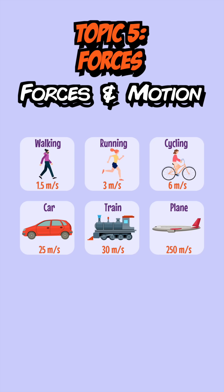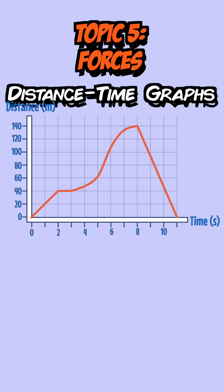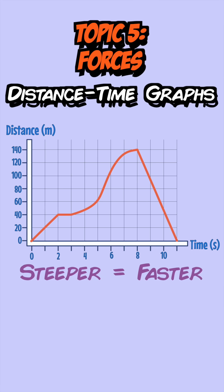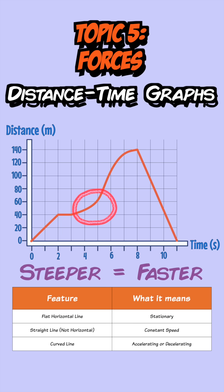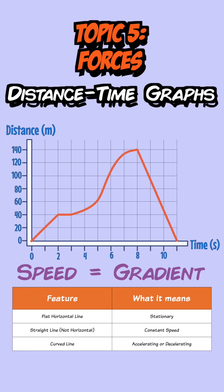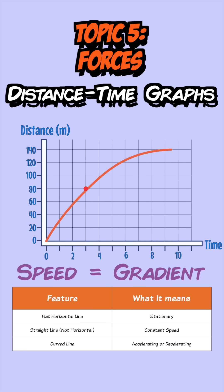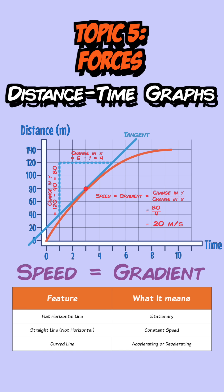You can represent the motion of an object using a distance-time graph where the steeper the line, the faster the object is moving. A flat horizontal line means the object isn't moving, any other straight line means it's traveling at a constant speed, and a curved line means it's accelerating or decelerating. To find the speed at any point find the gradient — on a curved part, draw a tangent and find the gradient of the tangent.